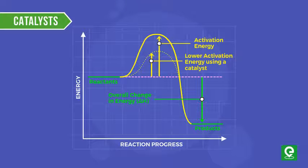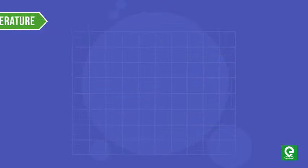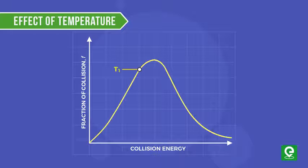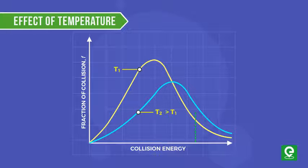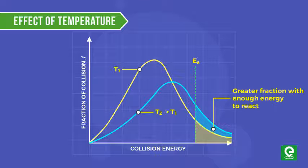Effect of temperature on activation energy: At low temperatures, only a small fraction of the colliding molecules will have enough energy to overcome the activation energy barrier, and therefore the reaction will proceed slowly. However, at higher temperatures, more molecules have the minimum energy needed to react and it will speed up the reaction.